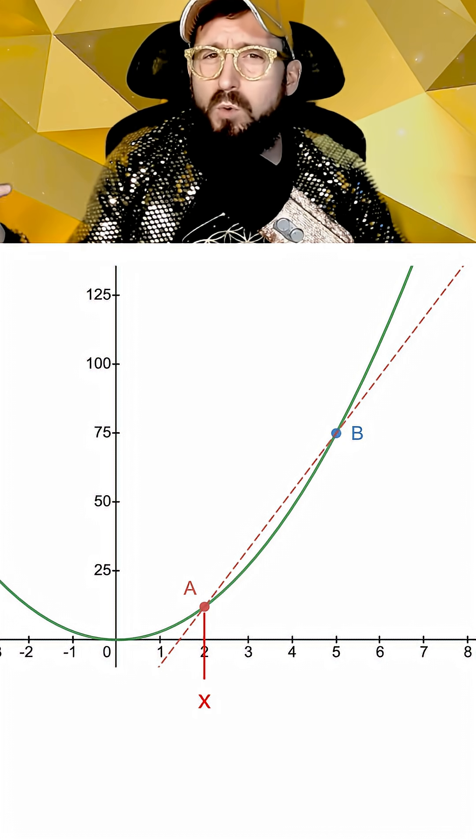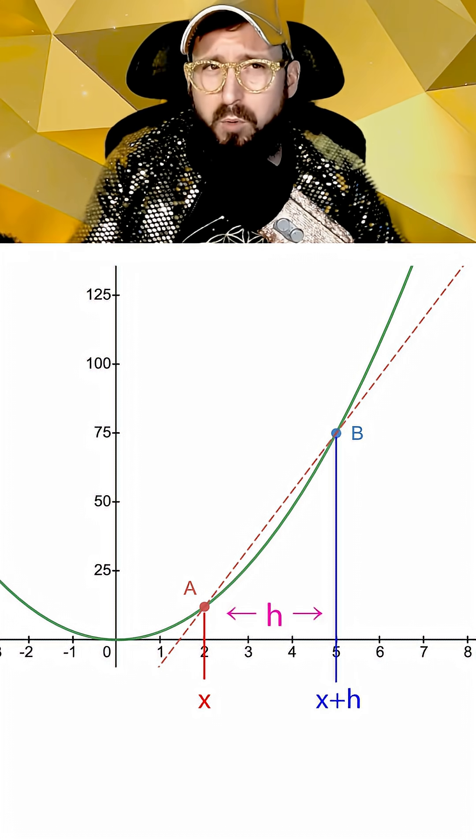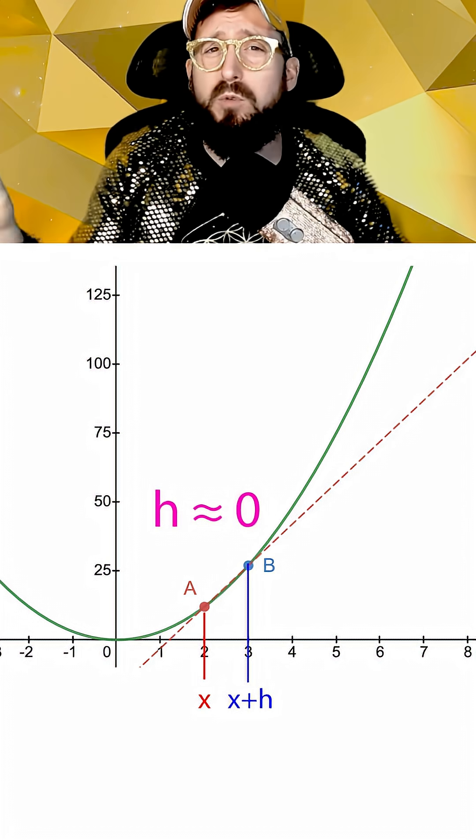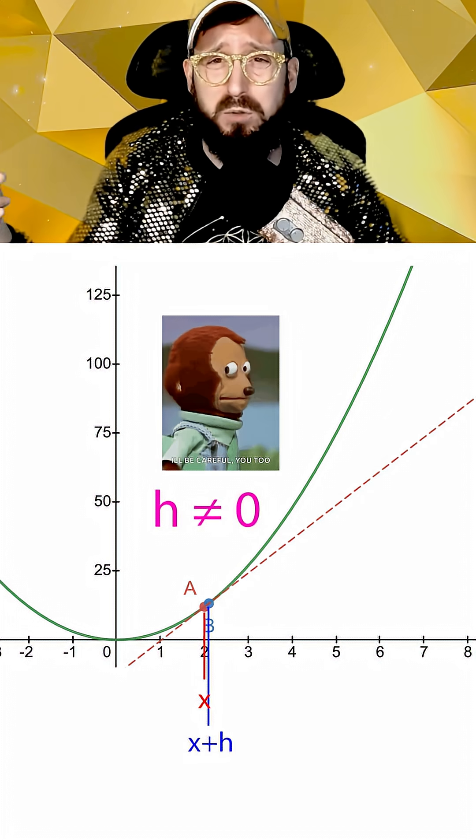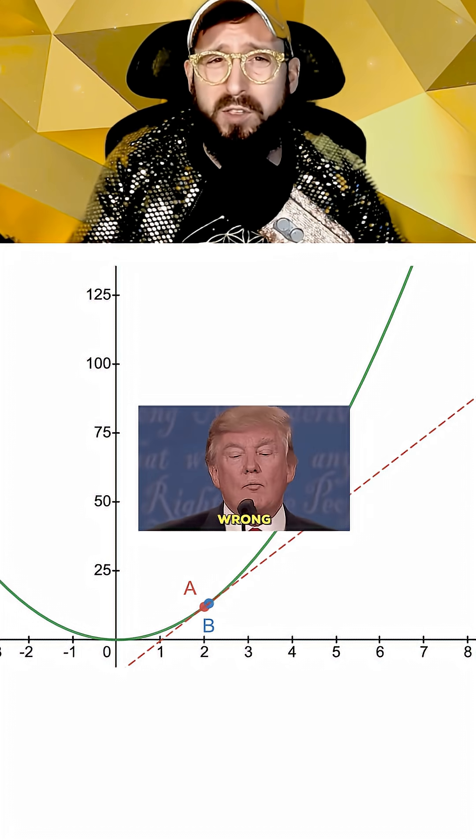Now getting b very close to a would mean making the horizontal distance between the points, h, smaller and smaller until it was basically zero, but not actually zero. You can't find the slope between two points that are on top of each other.